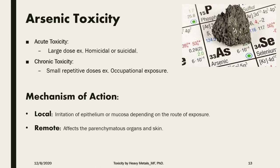The first element we will discuss is arsenic. Acute arsenic toxicity is caused by ingestion or exposure to large doses, which happens in homicidal or suicidal cases. Chronic toxicity happens after small repetitive doses due to the cumulative effect, an example being occupational exposure. The mechanism of action includes local irritation of the epithelium or mucosa depending on the route of exposure — GIT or respiratory.